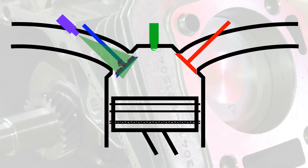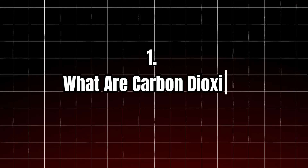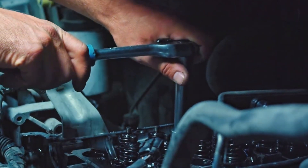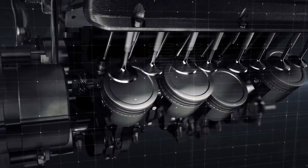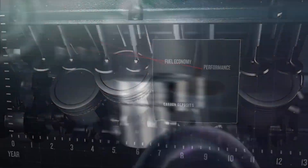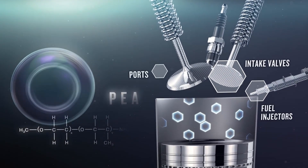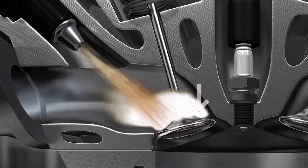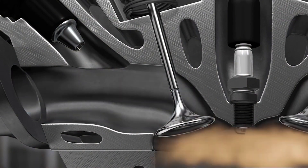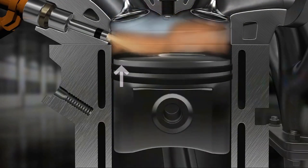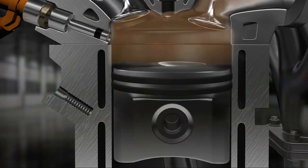Let's dive in and learn how to tackle carbon buildup head-on, saving your car from unnecessary wear and tear. First, what are carbon dioxide deposits? Carbon dioxide deposits are the byproducts of incomplete combustion in your engine. These deposits accumulate on your engine valves, piston rings, intake manifold, and other internal components over time. They are primarily composed of carbon, which forms when fuel is burned but doesn't completely vaporize. When carbon dioxide deposits build up, they can disrupt smooth engine functioning, leading to poor acceleration, reduced fuel efficiency, and even engine misfires.